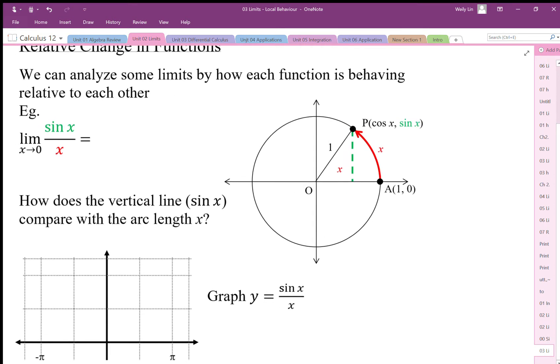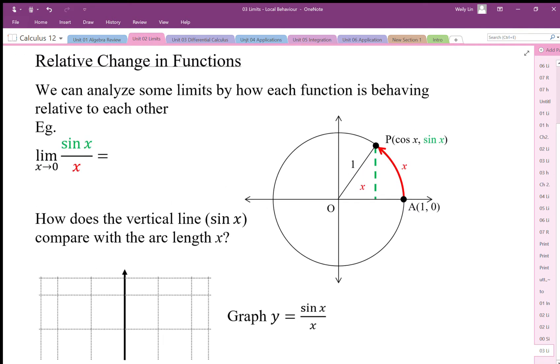Sine x over x as the limit goes to zero is actually a very important limit. This is one we want to start using as an identity. If we compare what sine x is, sine x would be the vertical height of this line in the unit circle, and x would represent the arc length in the circle. The angle x is actually really an arc length—that's why we use radians.